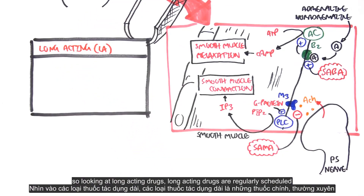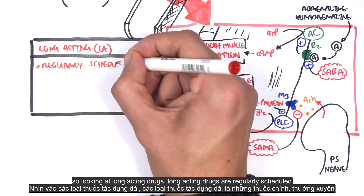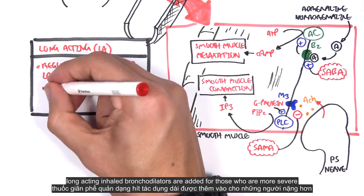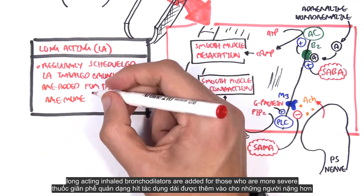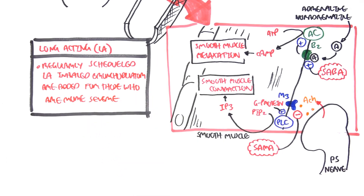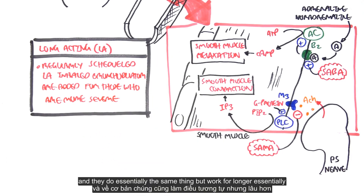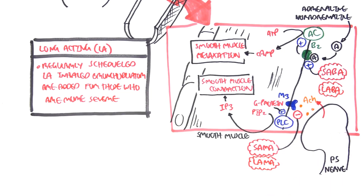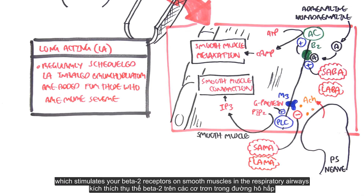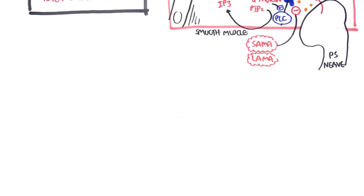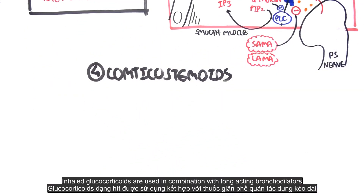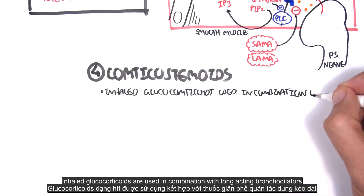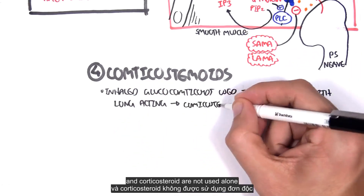Long-acting drugs are regularly scheduled. Long-acting inhaled bronchodilators are added for those who are more severe, and they essentially do the same thing but work for longer. These are your long-acting muscarinic antagonists, which inhibit the M3 receptors, and your long-acting beta-2 agonists, which stimulate beta-2 receptors on smooth muscles in the respiratory airways. Inhaled glucocorticoids are used in combination with long-acting bronchodilators — corticosteroids are not used alone.